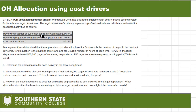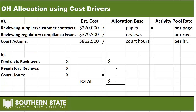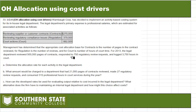The calculations are very simple and it's a pretty straightforward problem. I've got the three activities set up: reviewing supplier contracts, reviewing compliance issues, and court actions, along with the estimated costs given in the problem. The problem says we had 500,000 pages of contracts, 750 review requests, and 3,750 hours in court, so I'm going to plug those in.